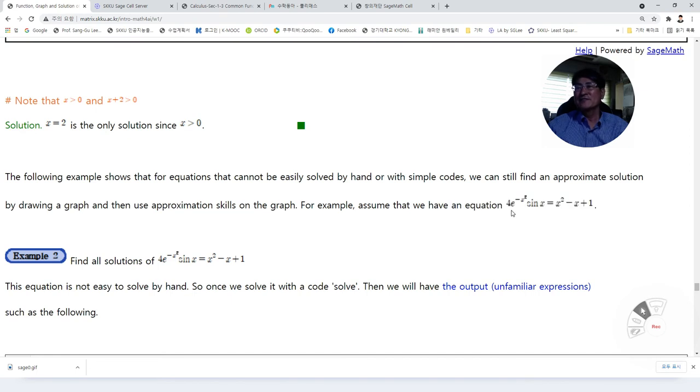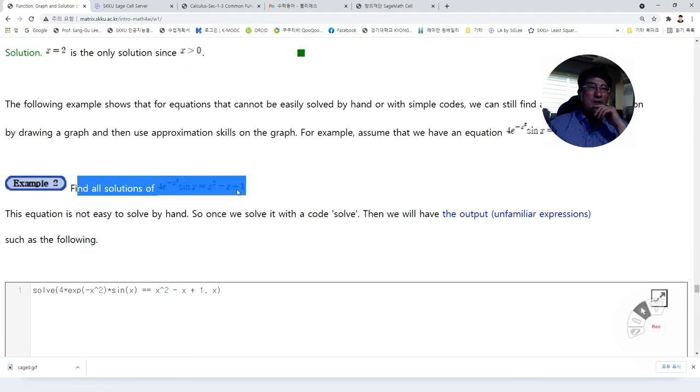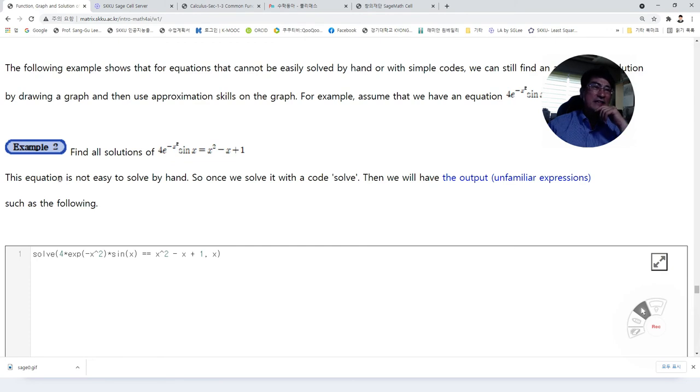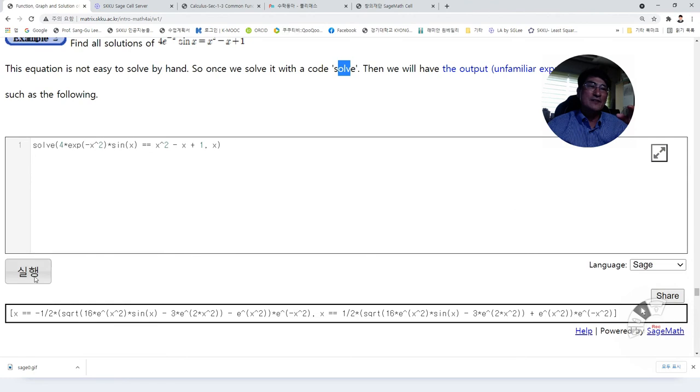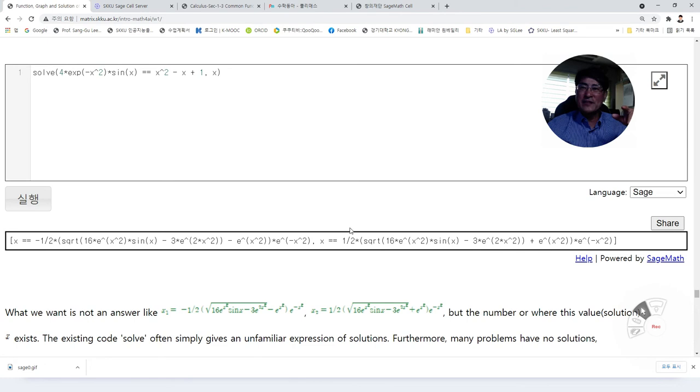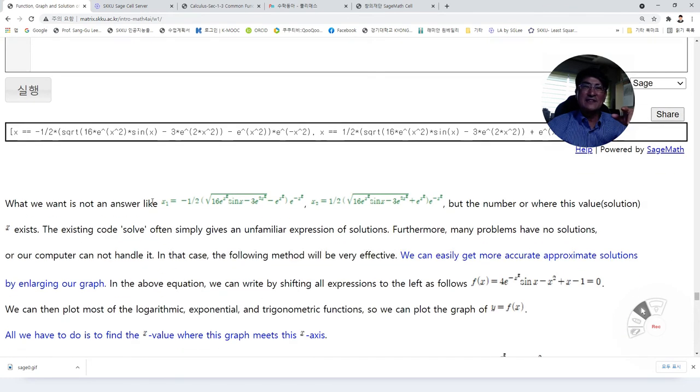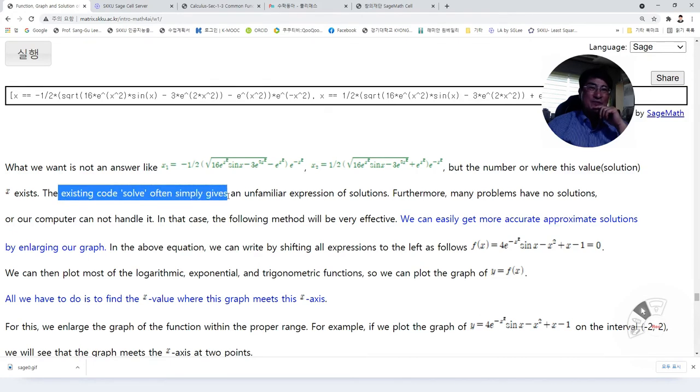For example, assume that we have equations like this. You never learned how to find the solution of this. But sometimes in AI, we need to find the solution of this kind of complex functions. This equation is not easy to solve by hand. And let's try to use solve. Then output comes out like this, but you also have to compute all these to find the solutions. This is not what the solution that you need in AI. You need a number. The existing code solve simply gives an unfamiliar expression of solutions.